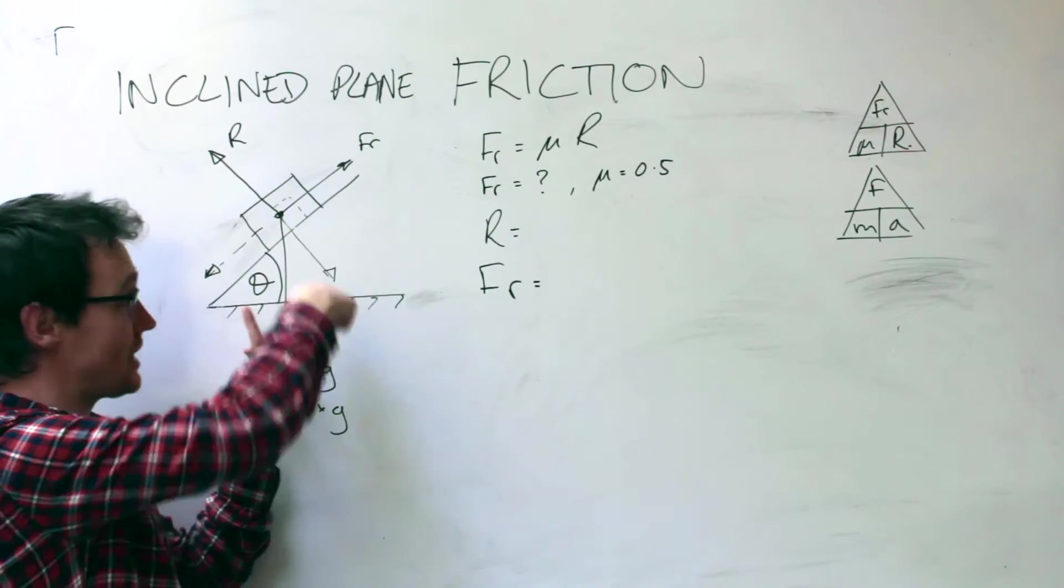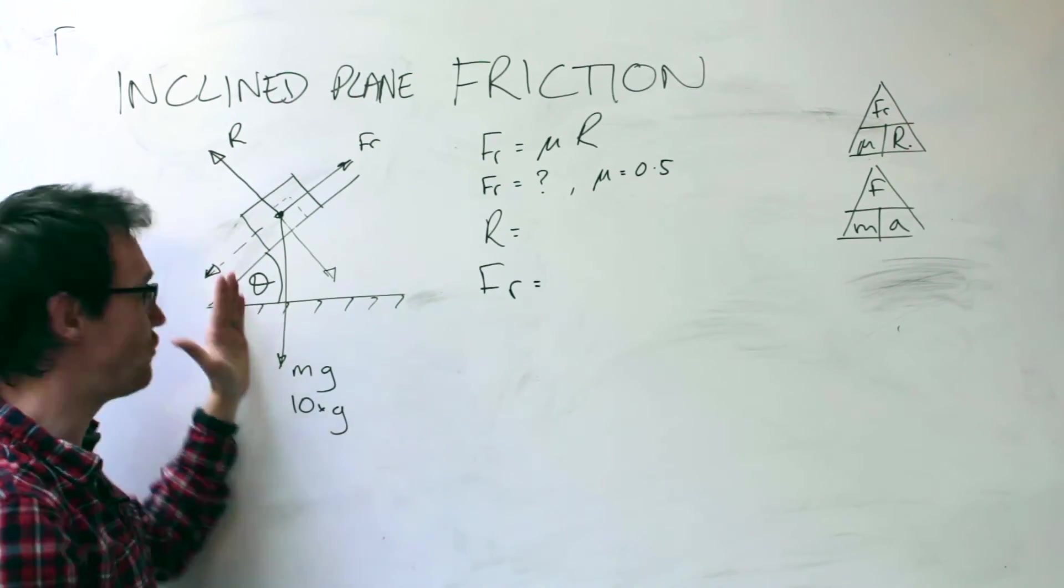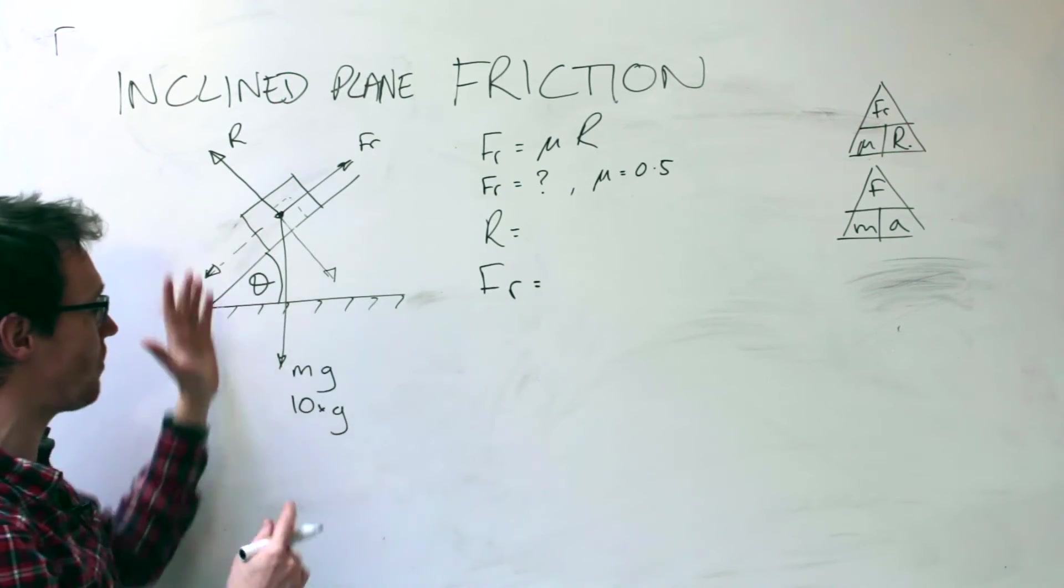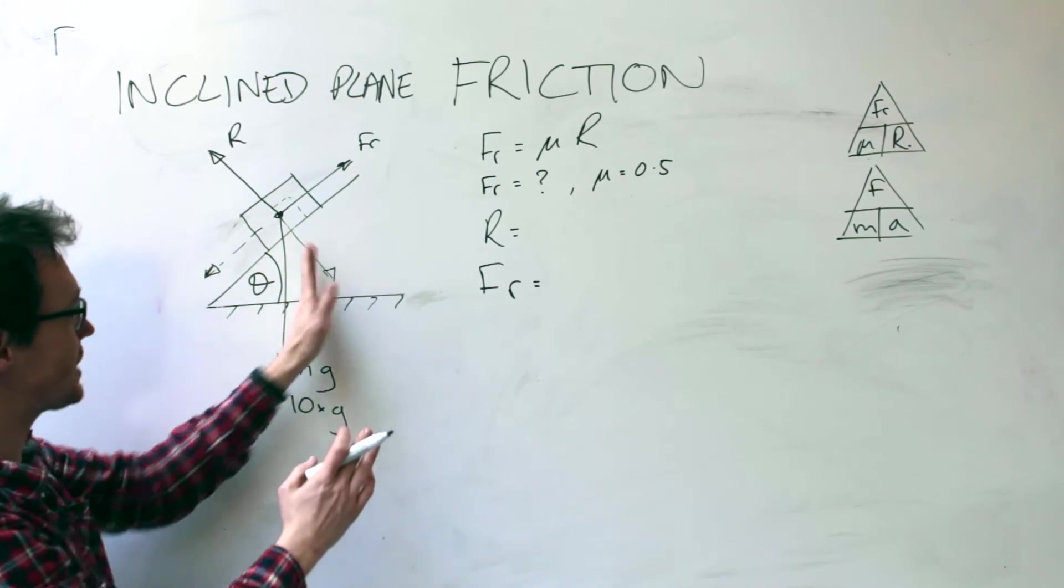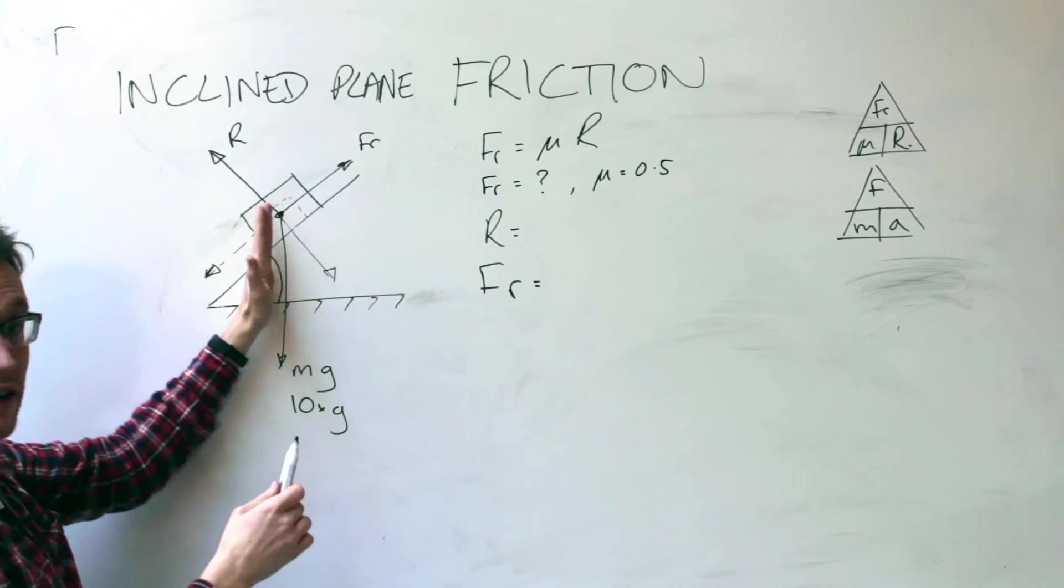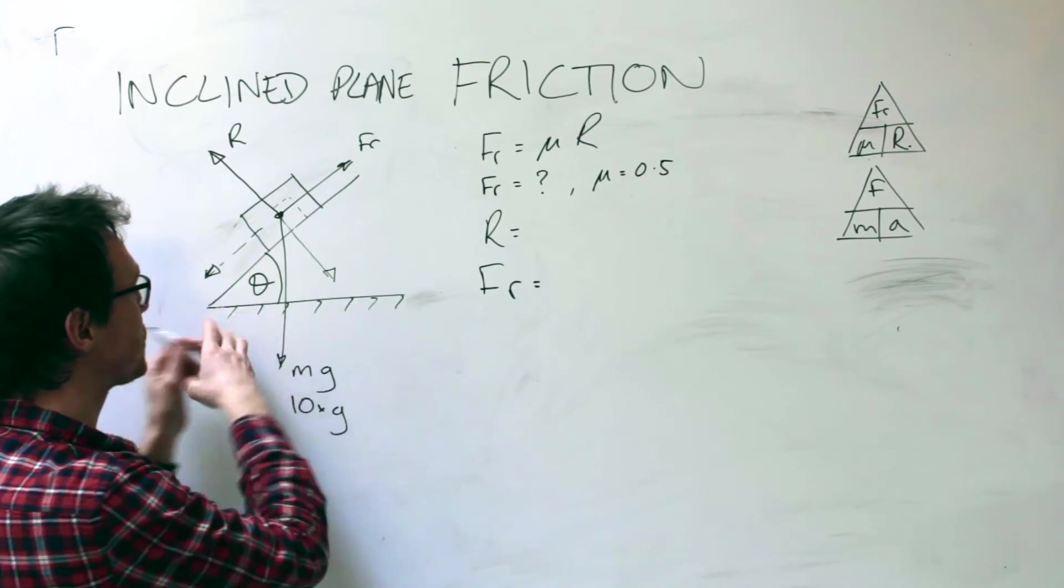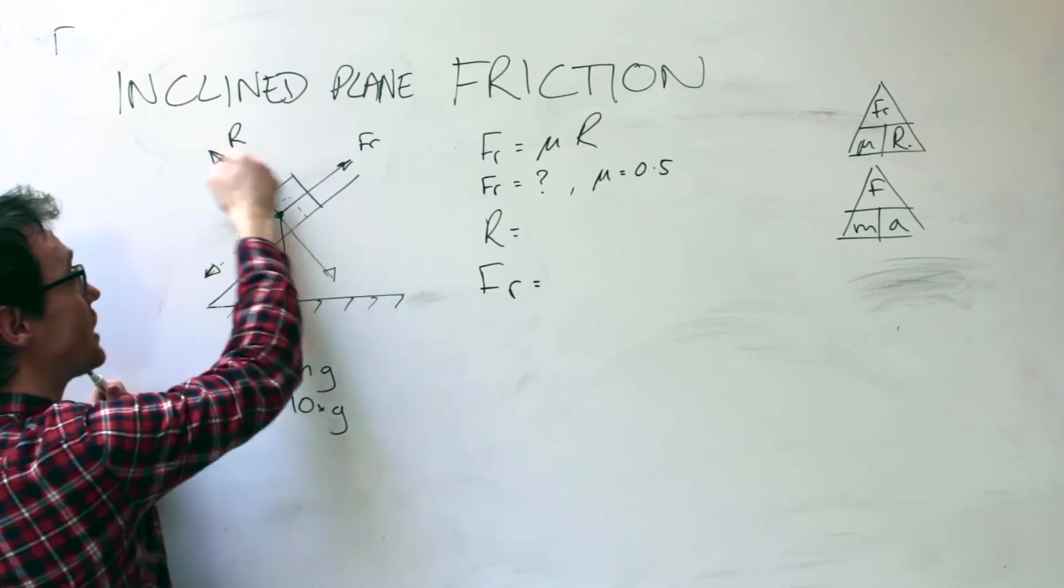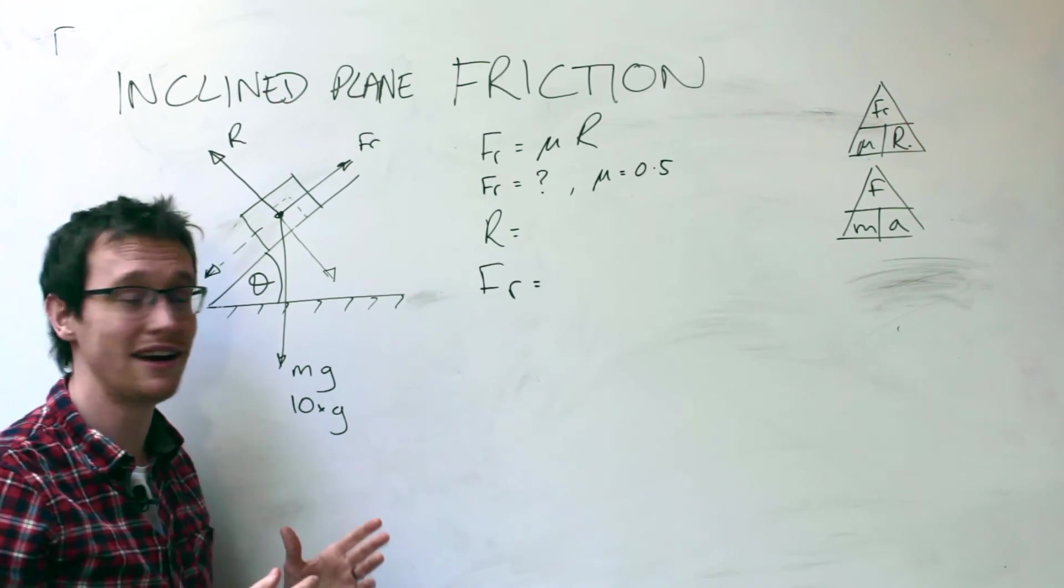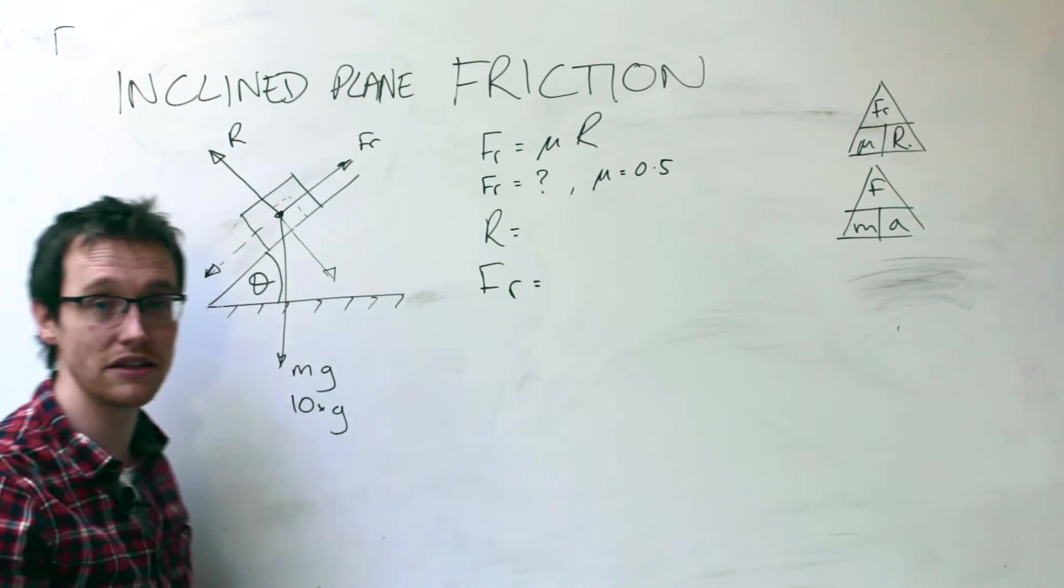Basically this mg is acting downwards, however the weight of the block is going to make this thing slide down the slope. So it makes sense that a component, a bit of that force, is helping the block slide down the hill. So we're going to need to resolve, find out how much of that mg force is going in this direction, and a bit of this force is going to be acting to give the reaction force. By resolving the forces, that's just the posh word for how much of this mg is acting down the slope and how much of the mg is pushing the block into the slope.